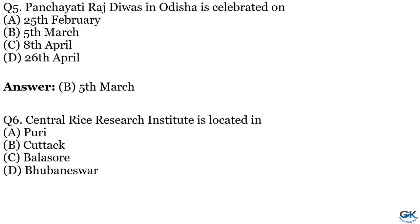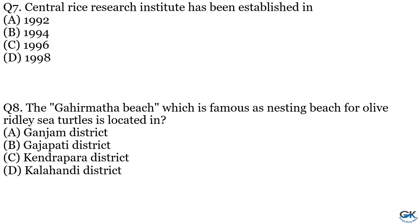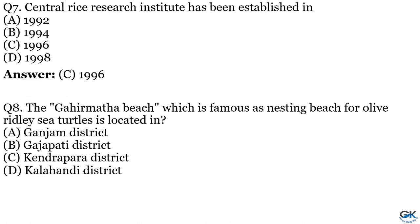Question No. 6: Central Rice Research Institute is located in which place? Option A: Puri. Option B: Cuttack. Option C: Balasore. Option D: Bhubaneswar. The answer is Option B, Cuttack. Question No. 7: Central Rice Research Institute was established in which year? Option A: 1992. Option B: 1994. Option C: 1996. Option D: 1998. The answer is Option C, 1996.